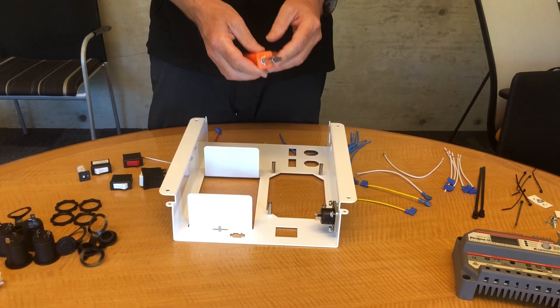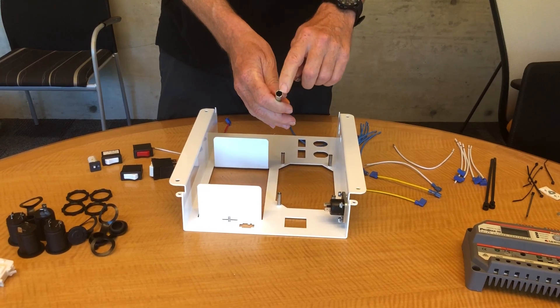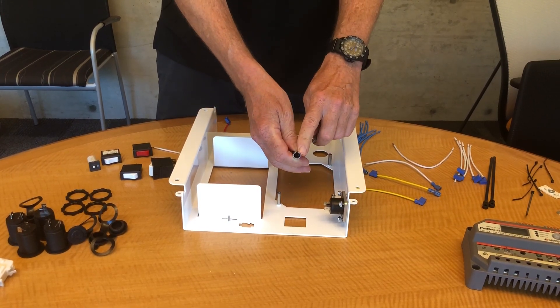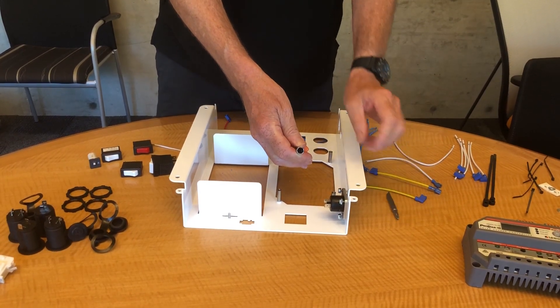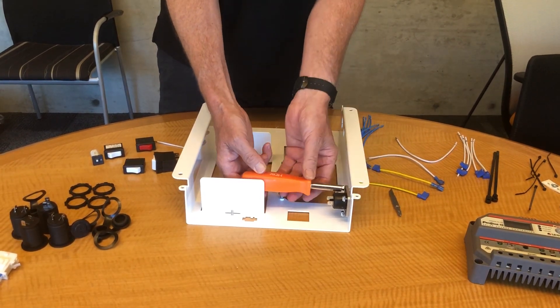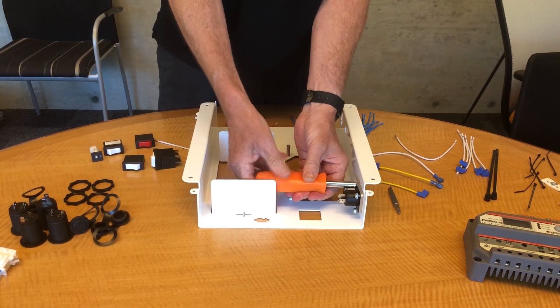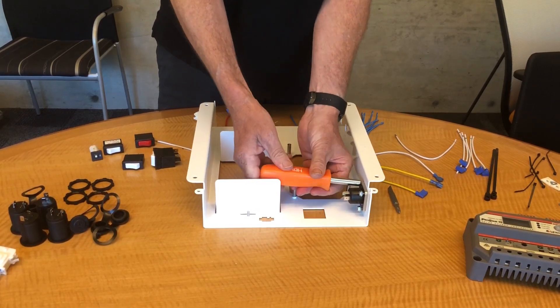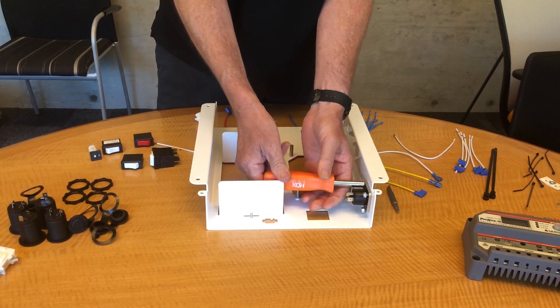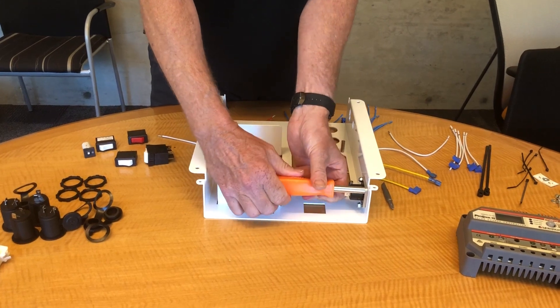So the way we tighten the nuts on the solar socket is with the little socket driver that's part of your 6-in-1 screwdriver. It's just the right size to tighten them. And so you go ahead and screw them on like this.